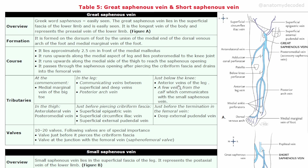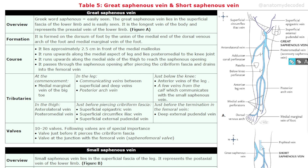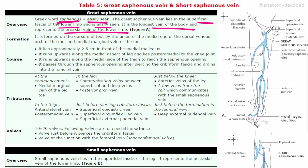The great saphenous vein: the word 'saphenous' means easily seen. It lies in the superficial fascia of the lower limb. It is the longest vein of the body and represents the pre-axial vein of the lower limb — the vein towards the medial aspect, from the great toe side. The small saphenous vein from the little toe side is the post-axial vein.